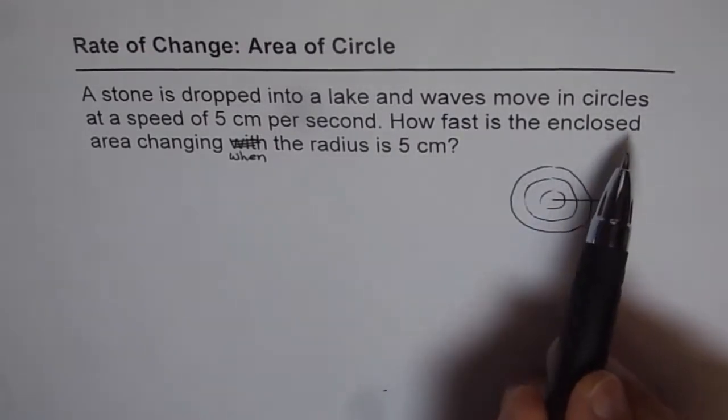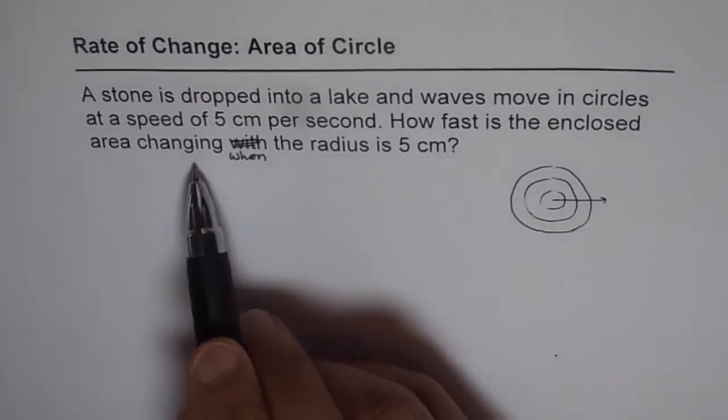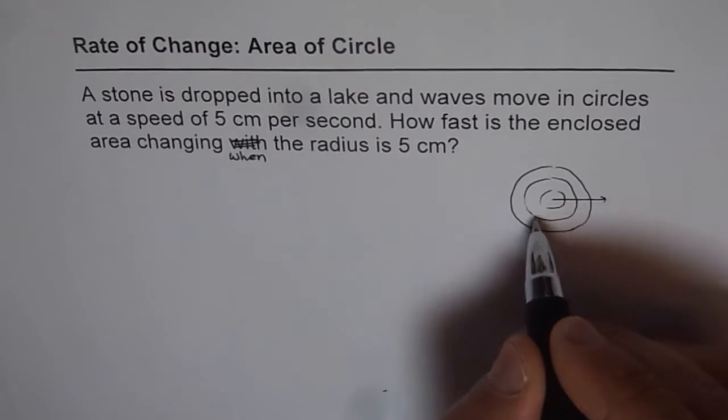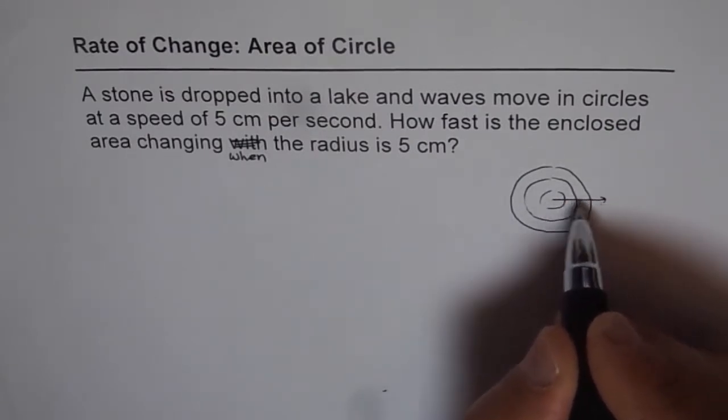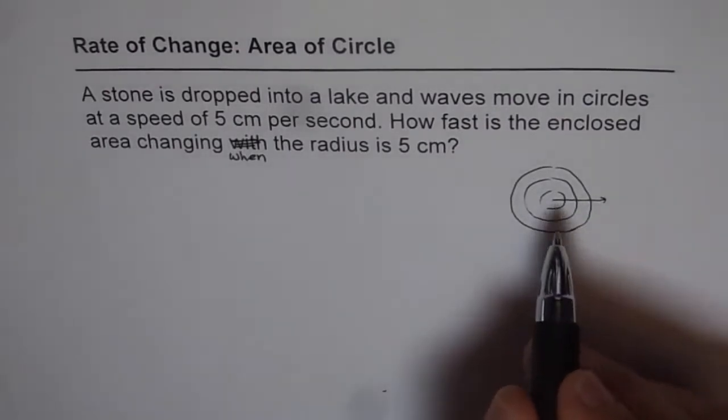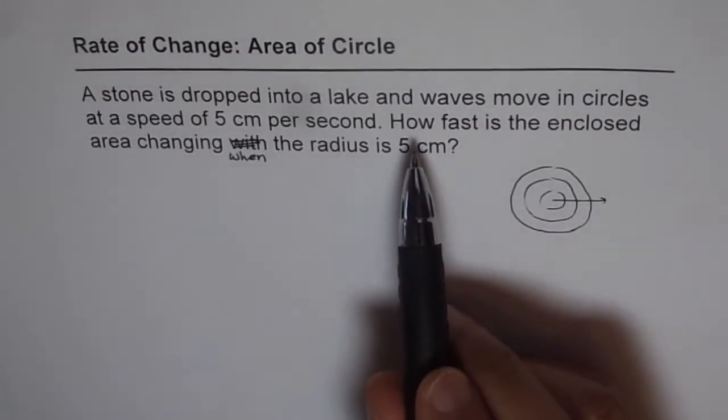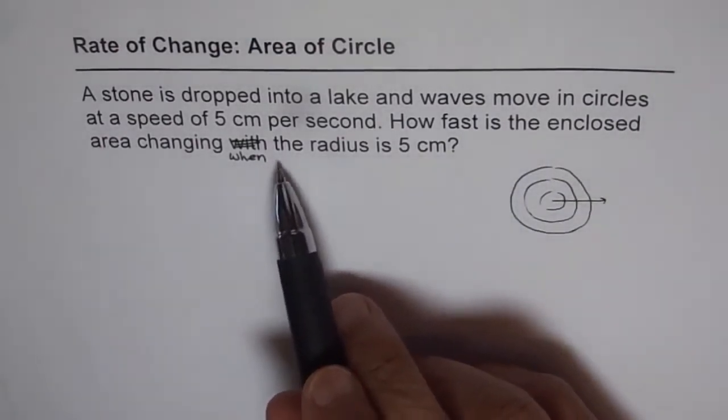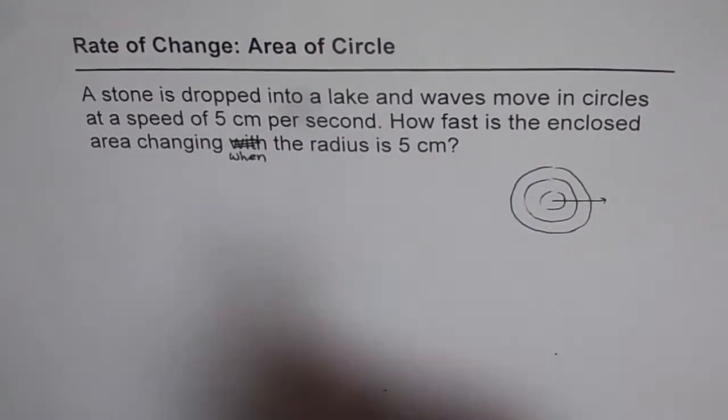How fast is the enclosed area changing when the radius is 5 cm? Every circle forms an area, and as the radius increases, the enclosed area increases.